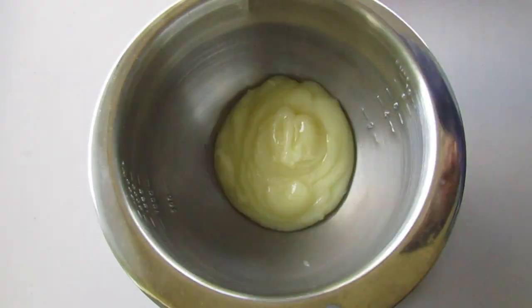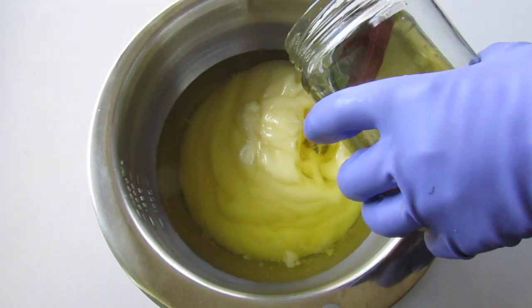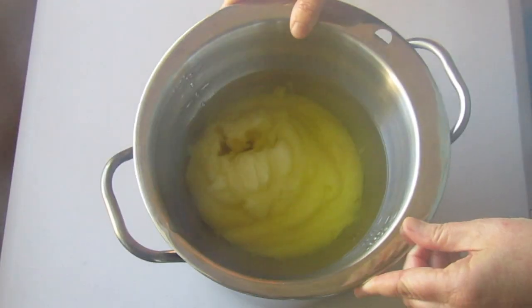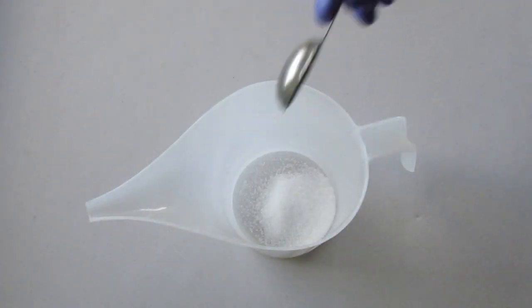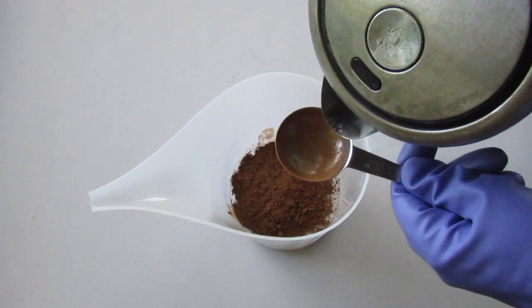This larger batch is for the main body of the soap and this is where the cassia infused olive oil is being used. I'm adding sugar to improve the bubbles and cocoa to colour the batter. These are dissolved in hot water.